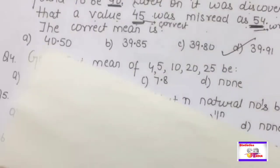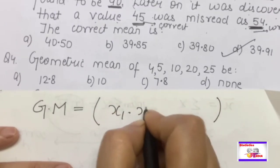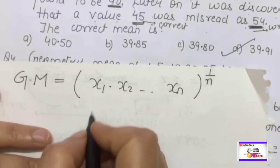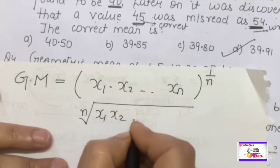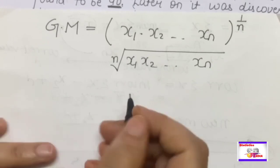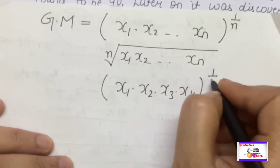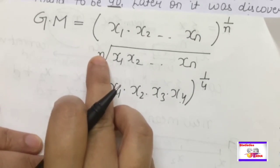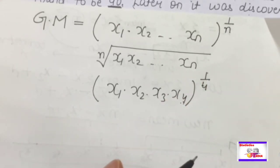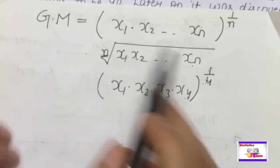Now moving on to geometric mean. Geometric mean: if you have N observations, first take their product, then take the Nth root. That is, GM = (x1 · x2 · x3 · ... · xN)^(1/N). For example with 4 observations, GM = (x1·x2·x3·x4)^(1/4). The key rule is: the number of observations equals the root you take.